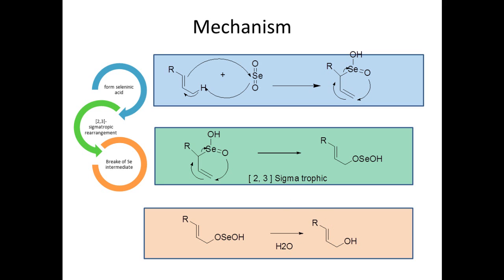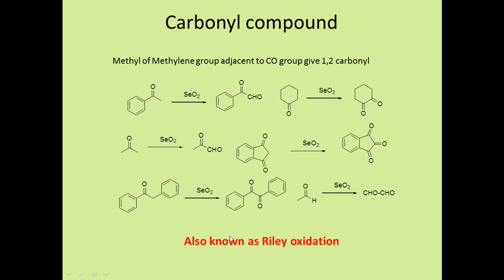If you want the alcohol, you must control the reaction. Next is the carbonyl compound oxidation: a methyl or methylene group adjacent to a carbonyl group gives a 1,2-dicarbonyl compound. A methyl group adjacent to C=O gives an aldehyde; a methylene group adjacent to C=O gives a diketone. These are examples of carbonyl compound oxidation, known specifically as the Riley oxidation.